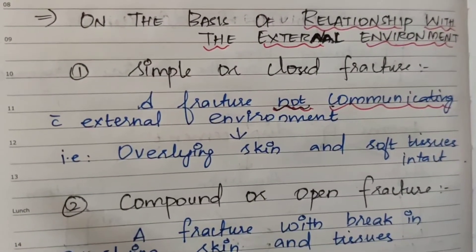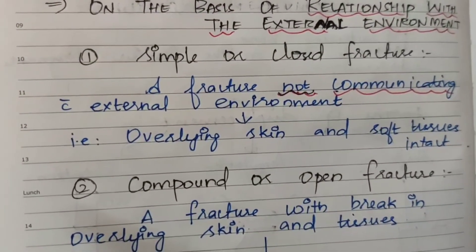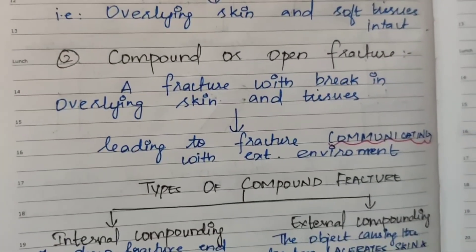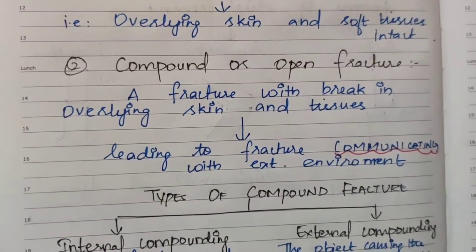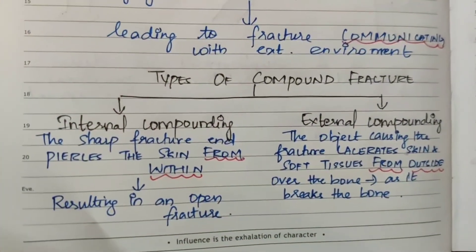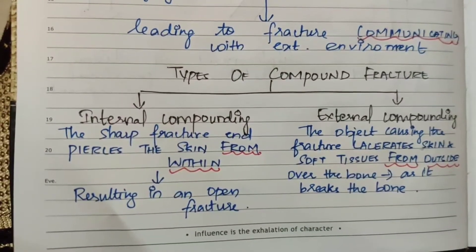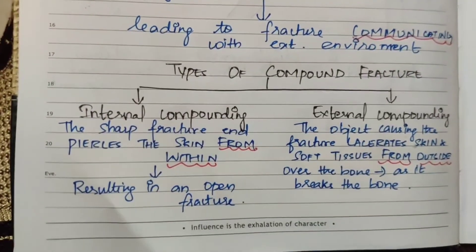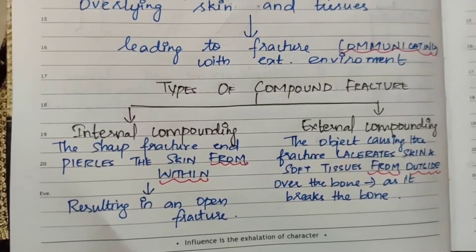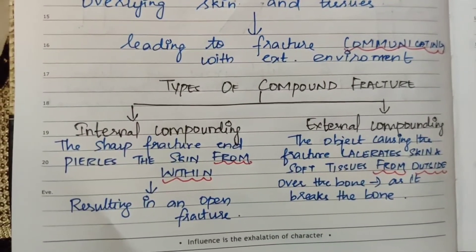Third classification: based on relationship with external environment. Simple or closed fracture: a fracture not communicating with the external environment — the skin remains intact. Compound or open fracture: a fracture with a break in the overlying skin and tissues leading to the fracture communicating with the external environment. Types of compound fracture: internal compounding, where the sharp fracture end pierces the skin from within; and external compounding, where the object causing the fracture lacerates the skin and soft tissue from outside.